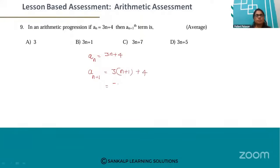This equals 3n plus 3 plus 4. 3 into n is 3n, 3 into 1 is 3. So this equals 3n plus 7.